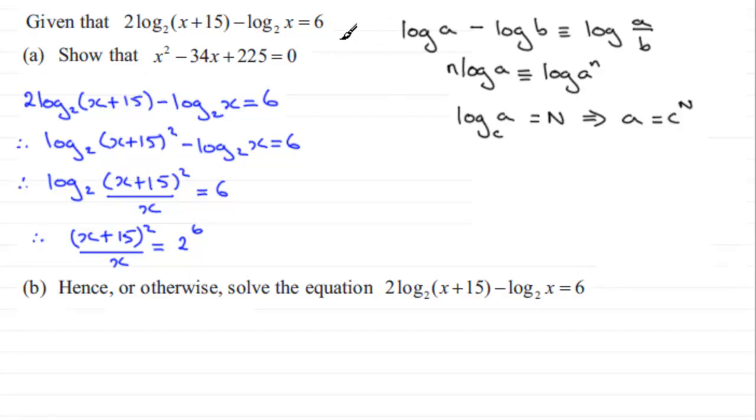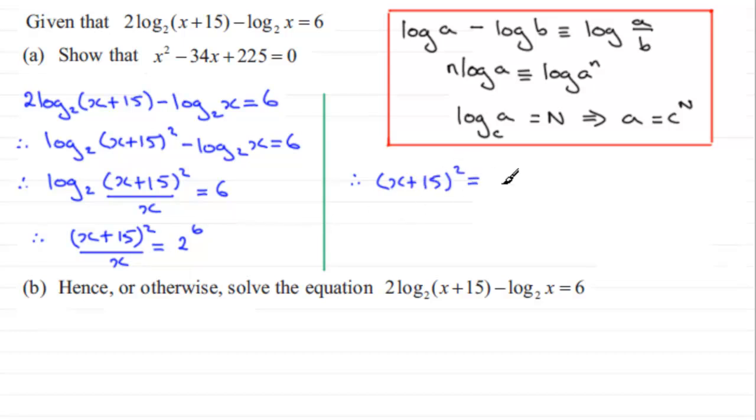So let's just come down here now and we'll box this off, these rules that you should be familiar with. As I say, if you're unsure of any of this stuff, do go on my website examsolutions.net - there's plenty of tutorials on logarithms. But if we now carry on with this, 2 to the power 6 is 64. And if I times both sides by x, I therefore have x plus 15 all squared equals 64x.